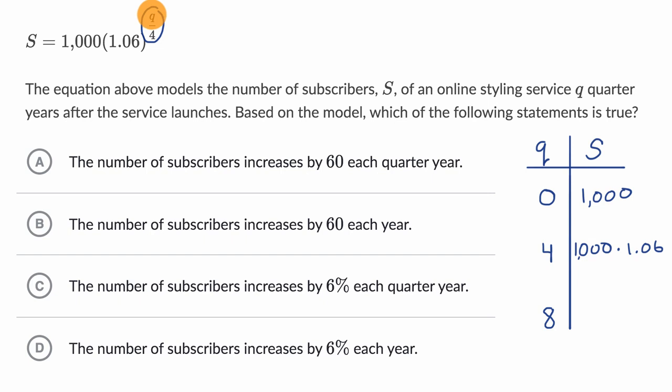And then when q equals eight, eight divided by four is two. So it's going to be 1.06 to the second power. So that's going to be 1,000 times 1.06 to the second power.